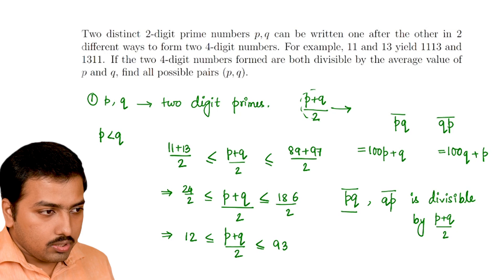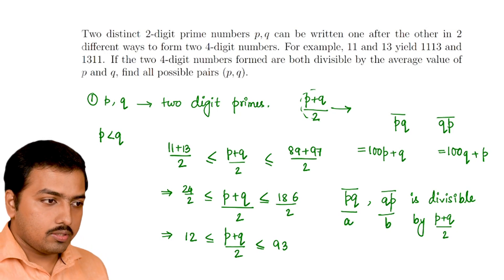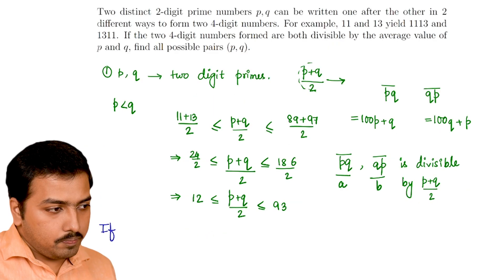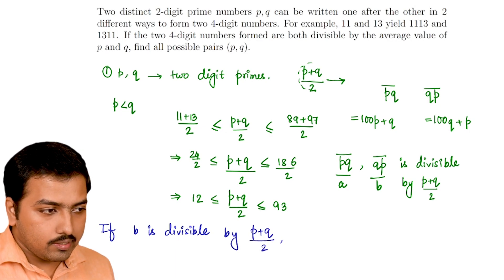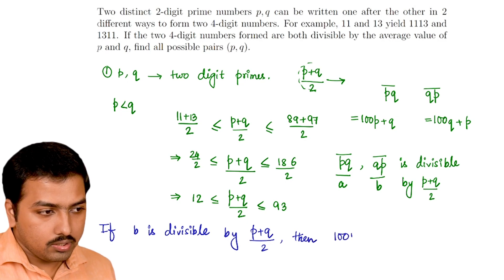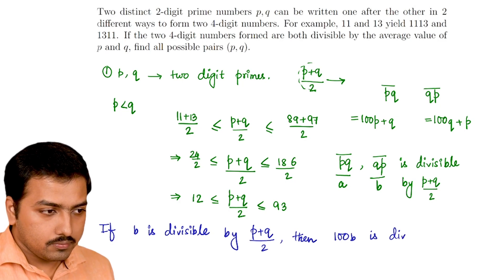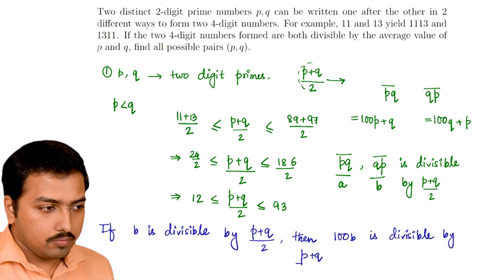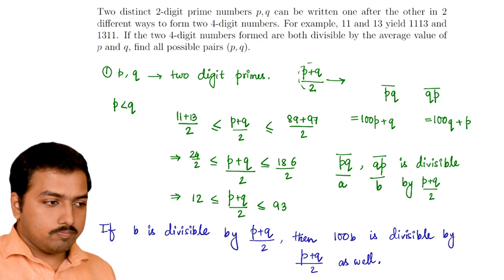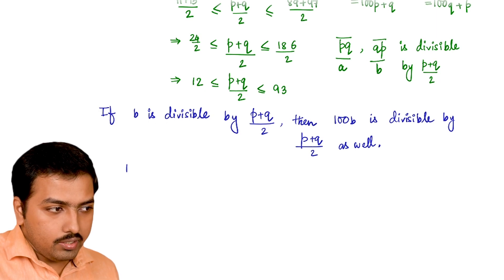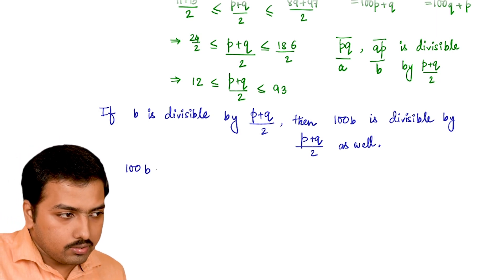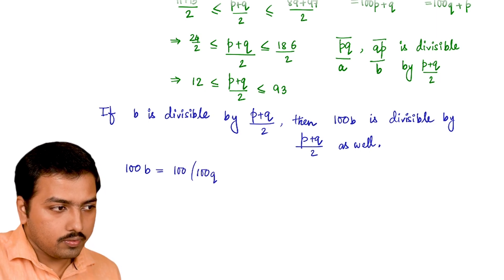So here we're going to use a theorem in number theory that states: let's call this a, this is b. If b is divisible by (p+q)/2, then 100b is divisible by (p+q)/2 as well. So why I asked you that, eventually we'll understand.